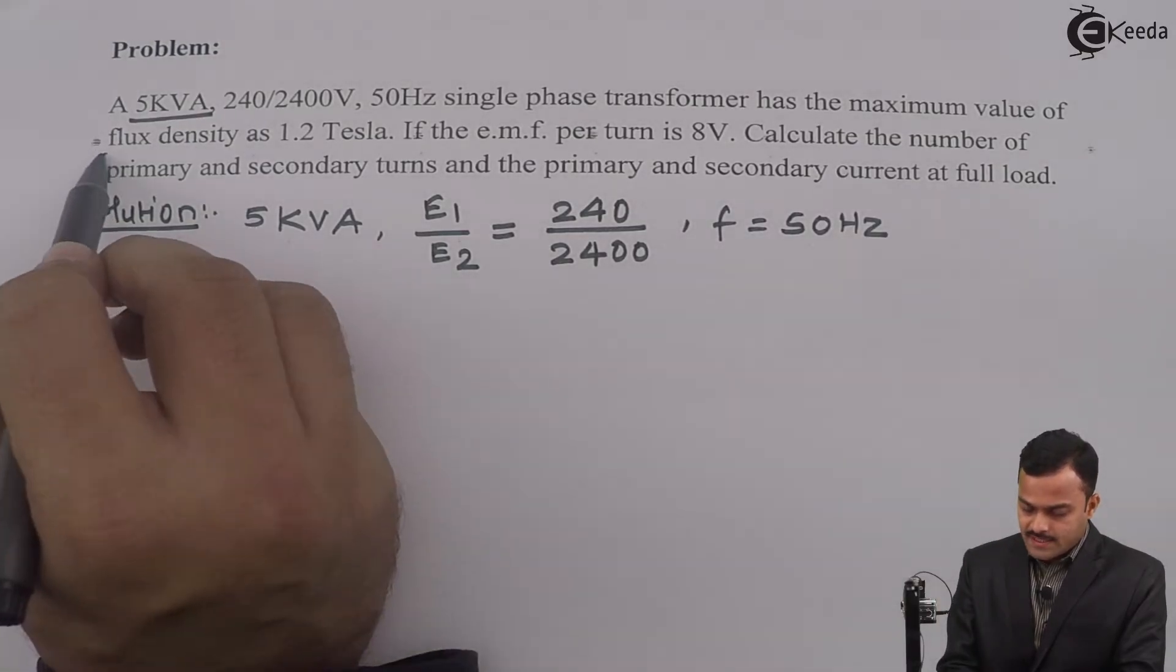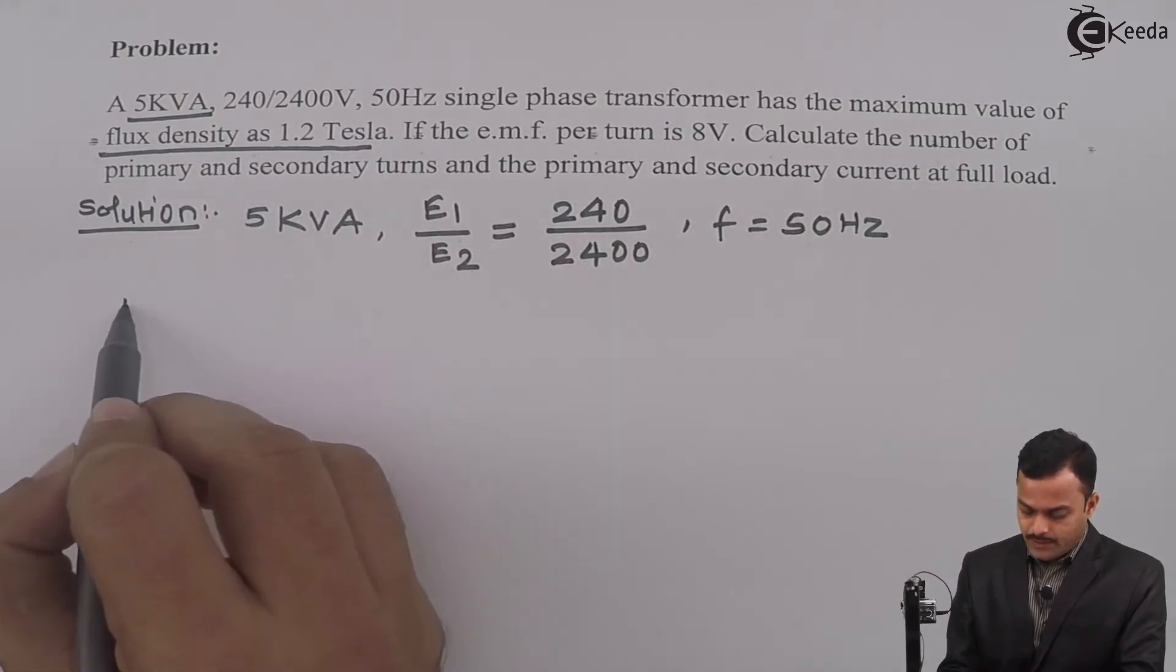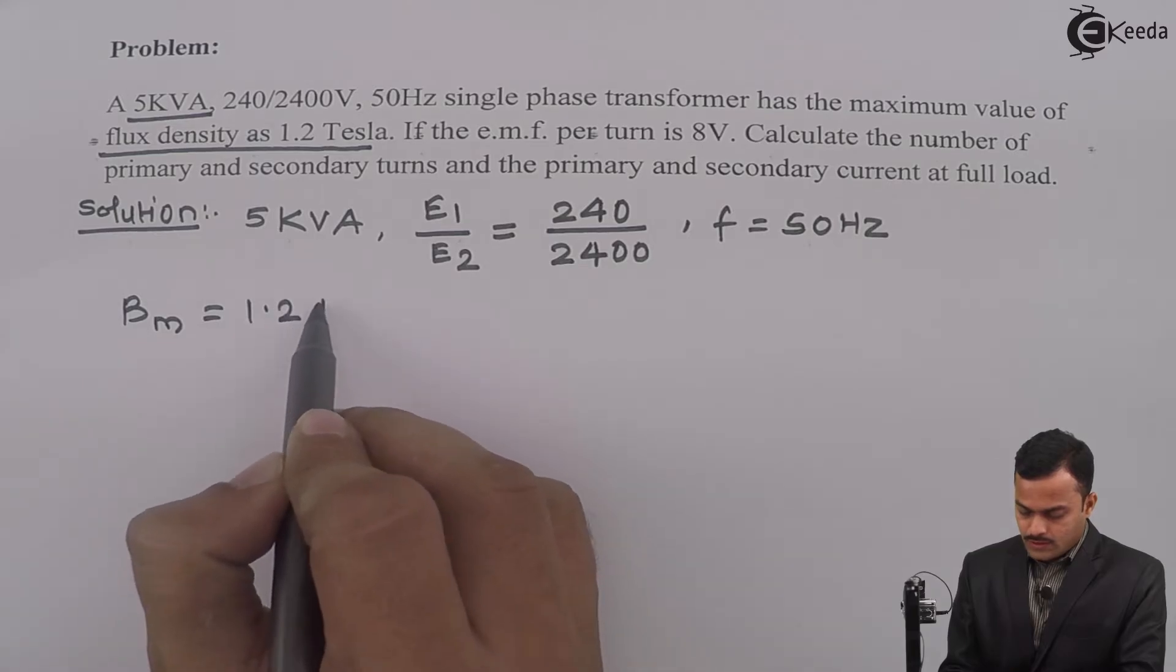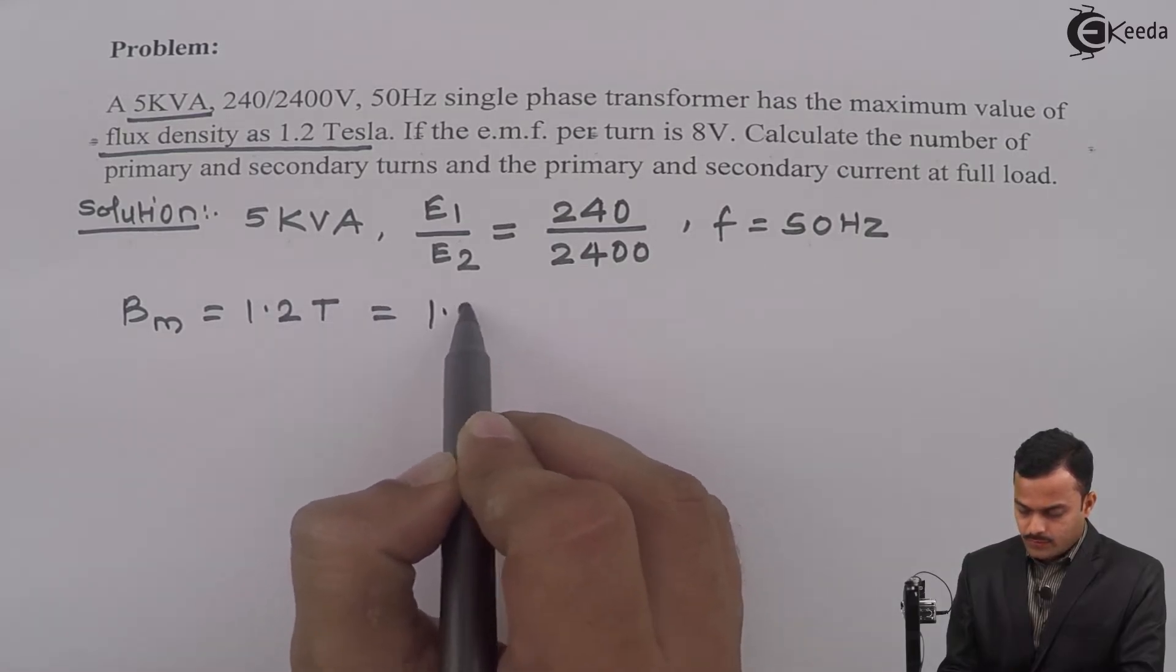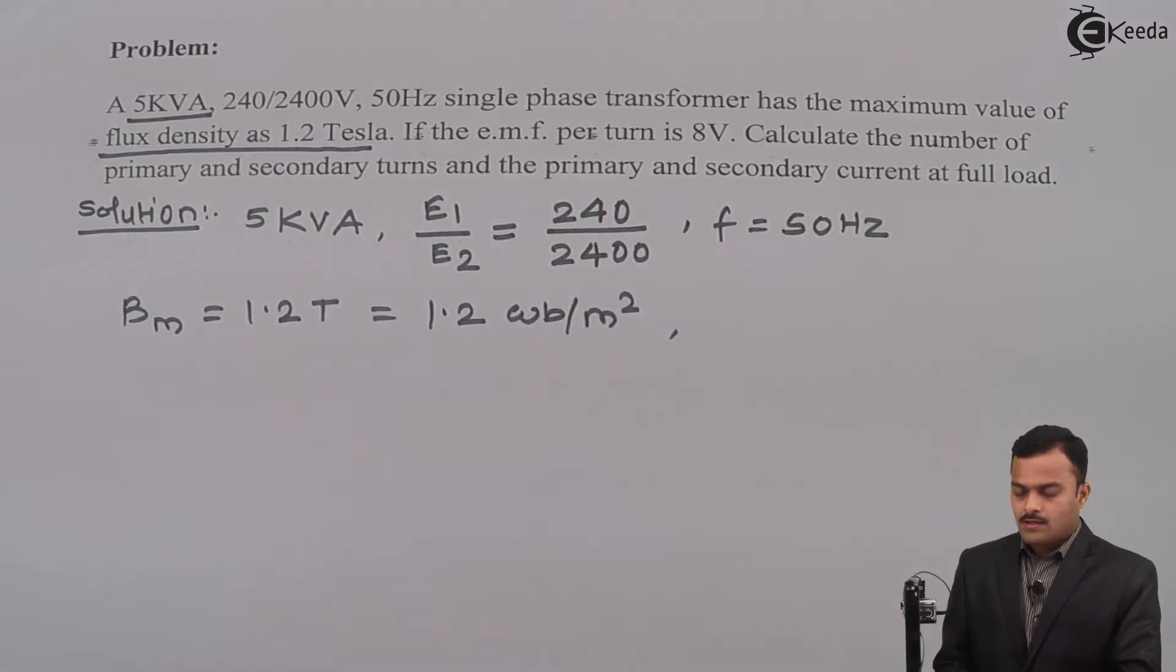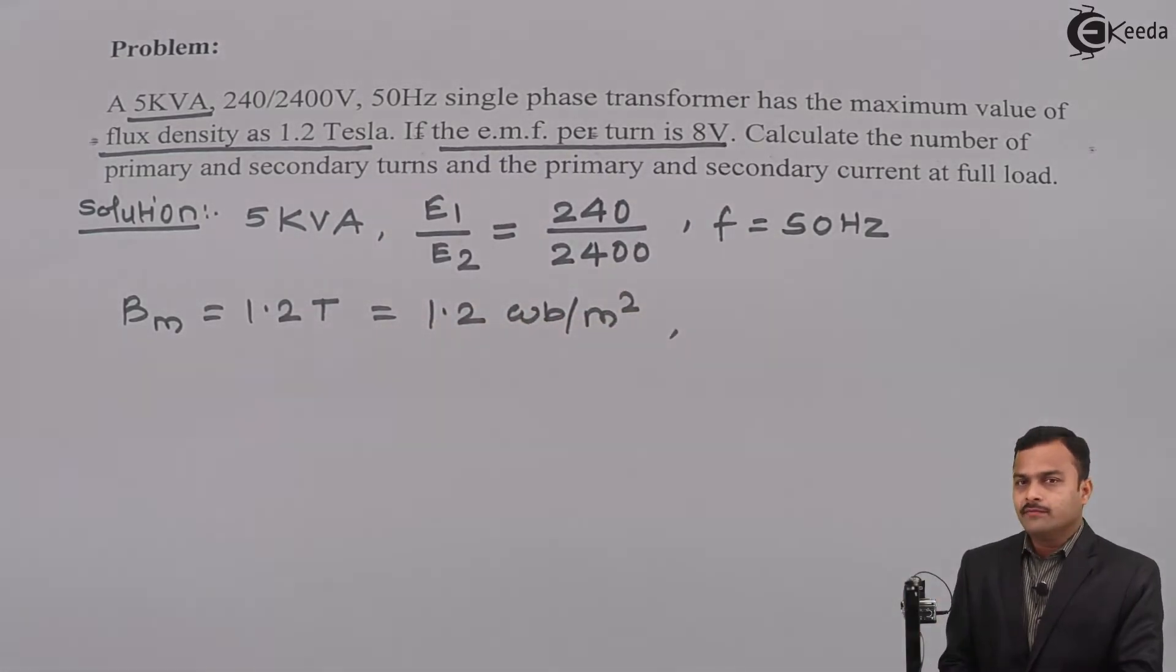Maximum value of flux density is 1.2 tesla. So, Bm is 1.2 tesla or you can say 1.2 Weber per meter square. And one more thing is given. The EMF per turn is 8 volt.